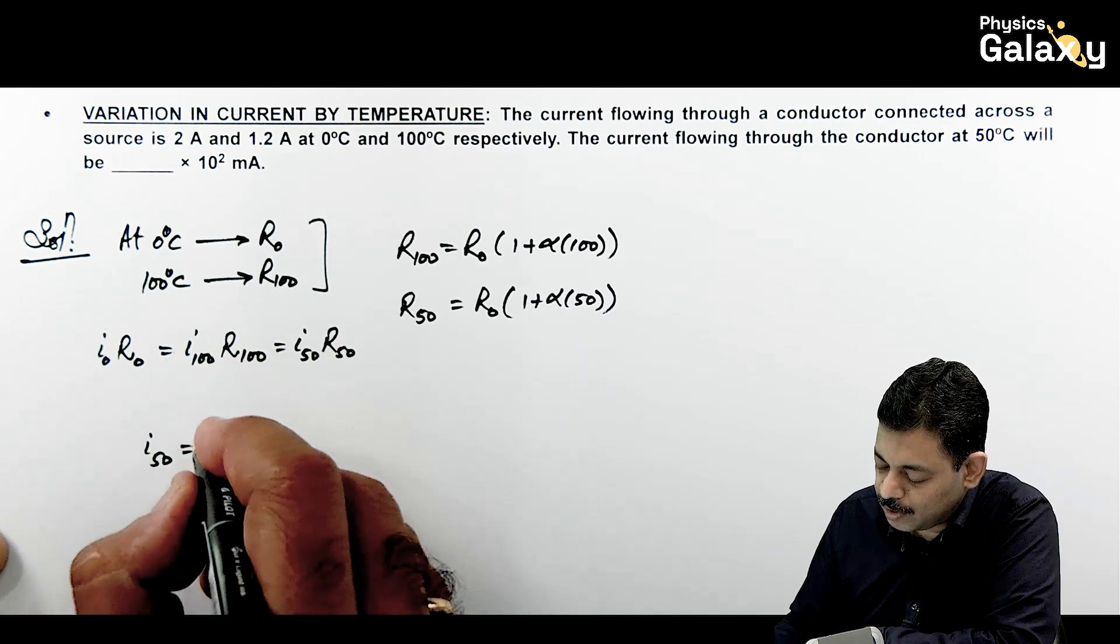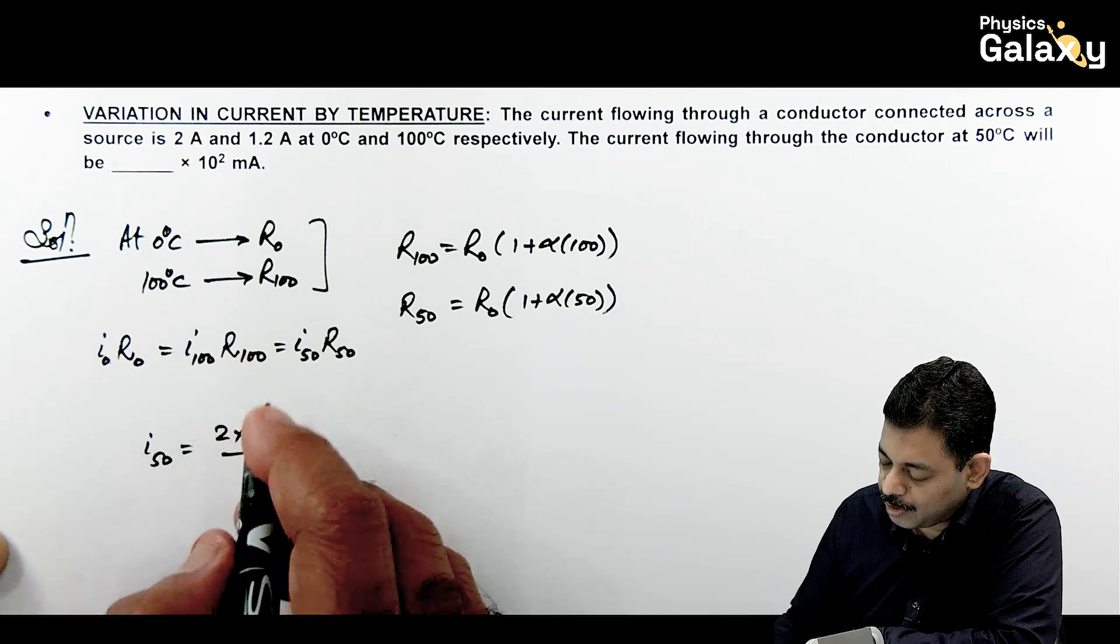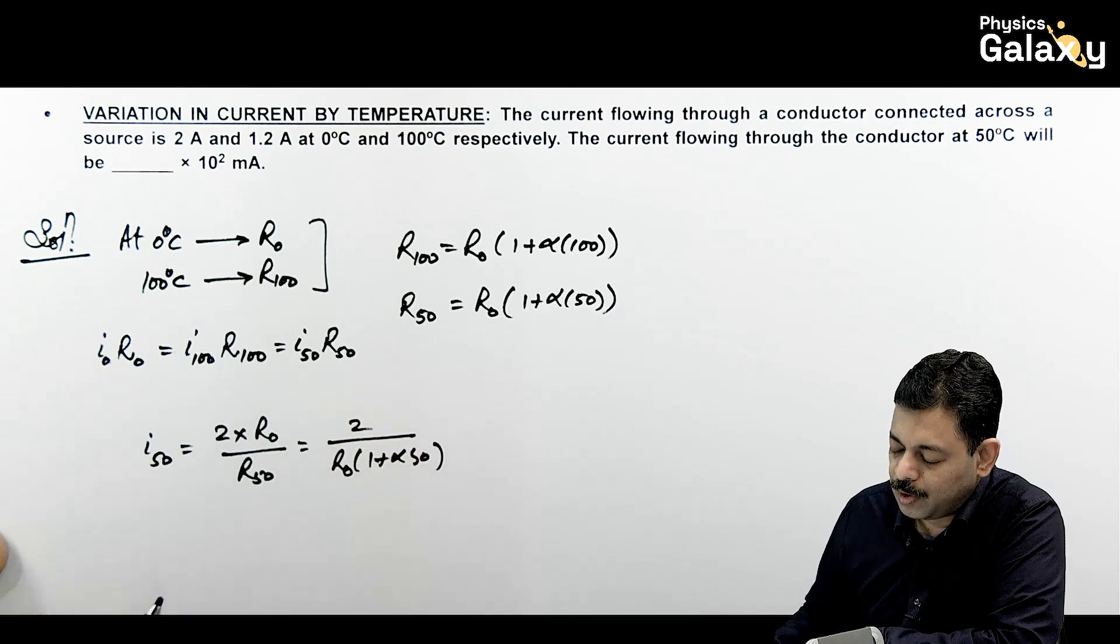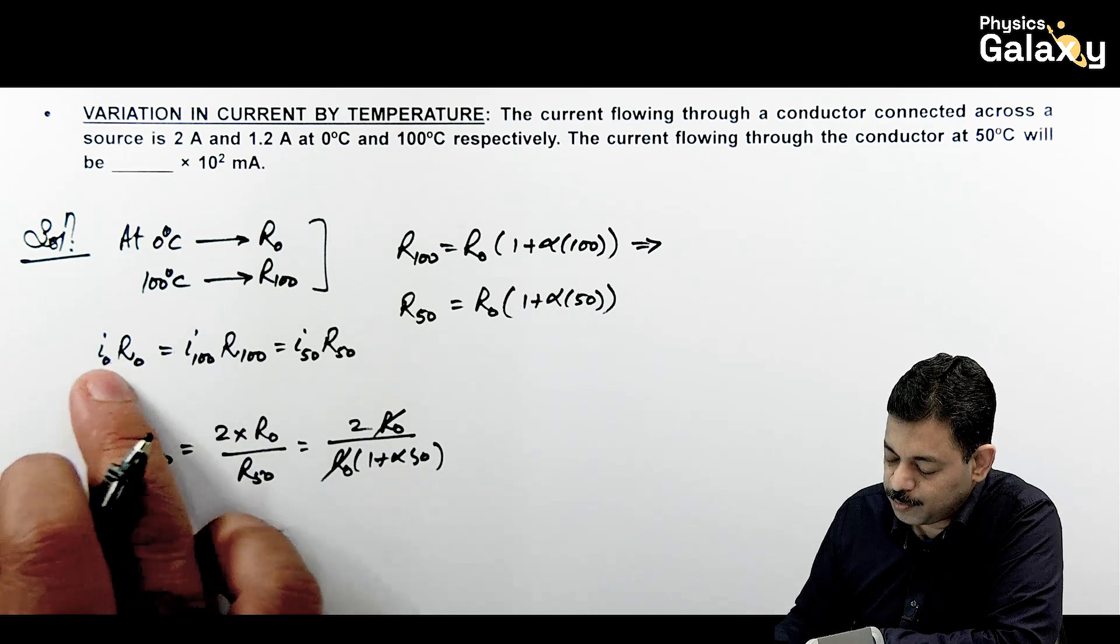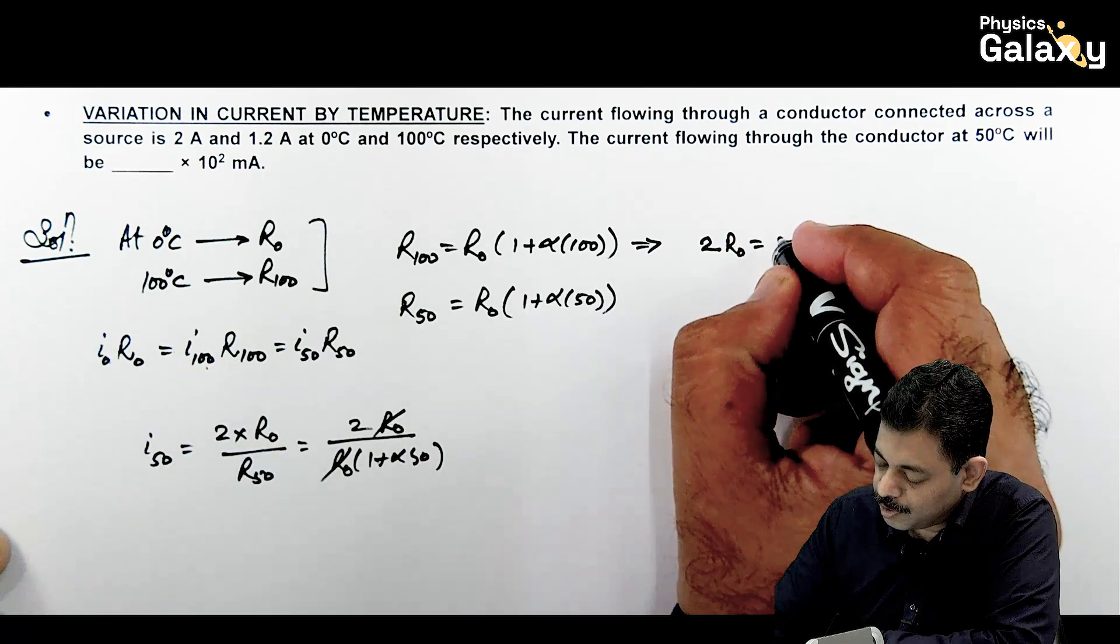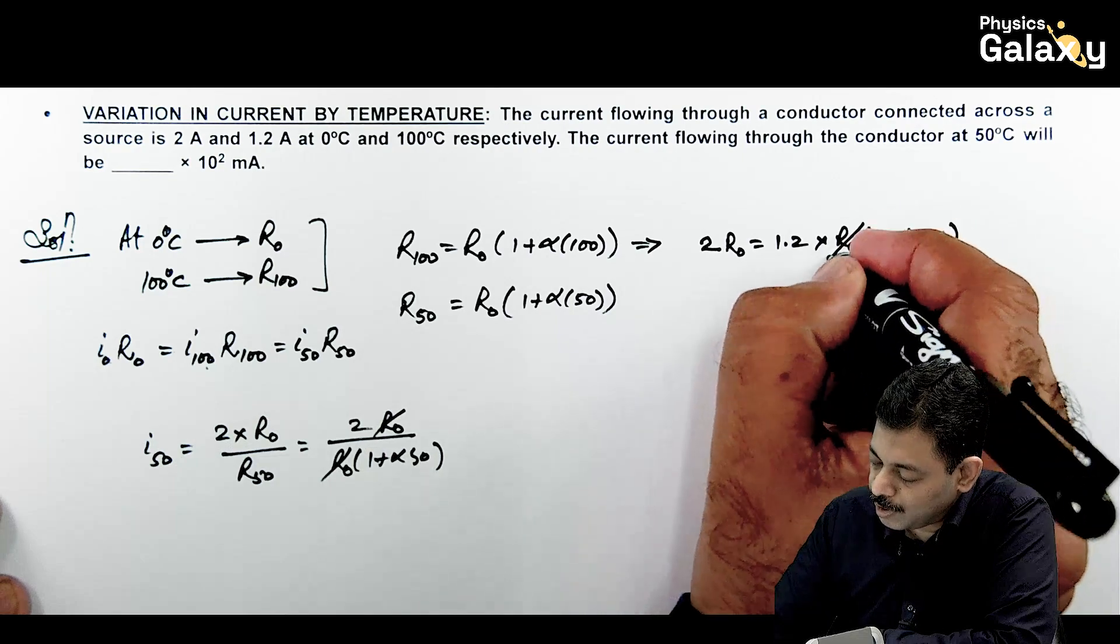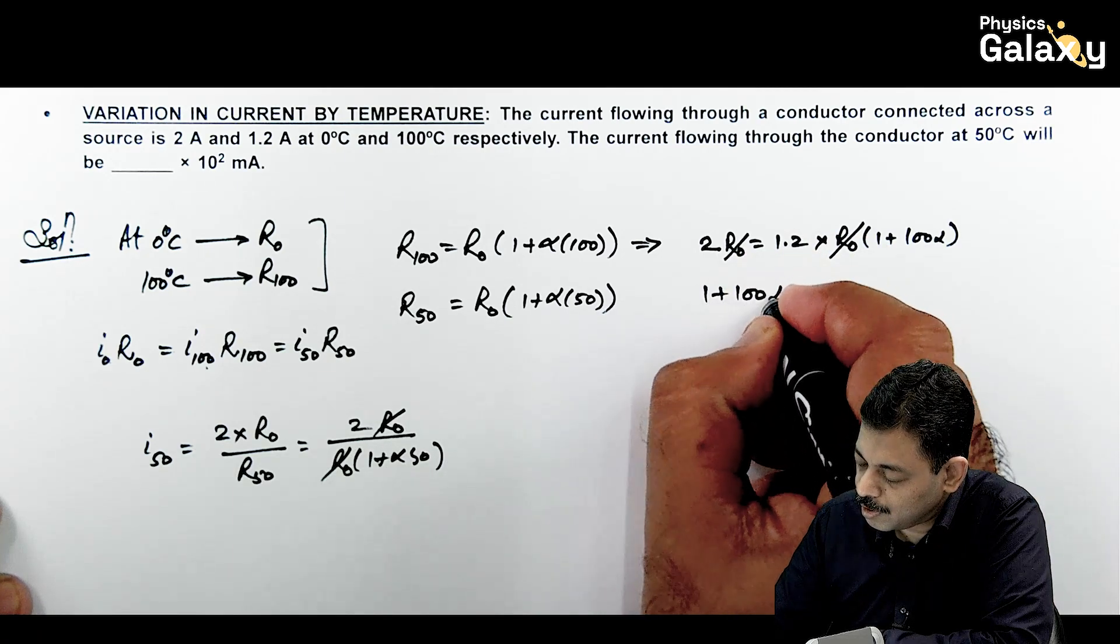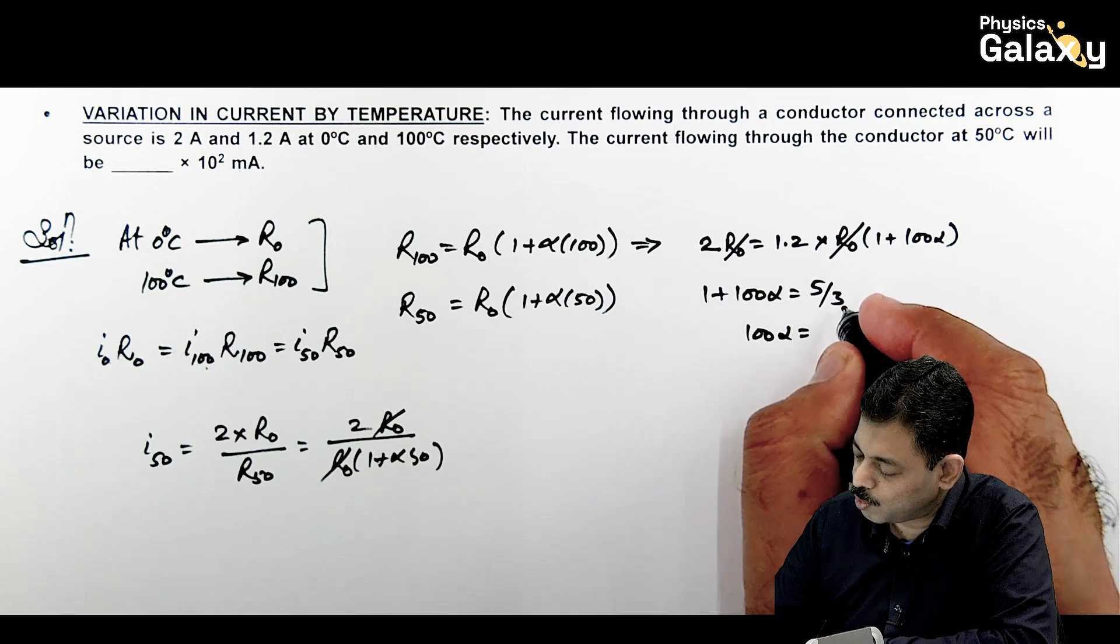I at 50 can be written as I₀R₀ divided by R at 50. So I can write it 2 divided by R at 50, which will be R₀(1 + 50α). Now I need to substitute alpha's value and R₀ gets cancelled out. From I₀R₀ = I₁₀₀R₁₀₀, we get 2R₀ = 1.2R₀(1 + 100α). This is 2/1.2 = 1 + 100α, which equals 5/3. So 100α is 5/3 - 1, which is 2/3. So 50α comes out to 1/3.